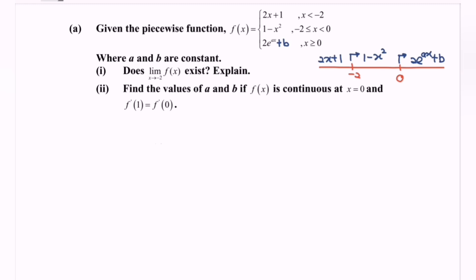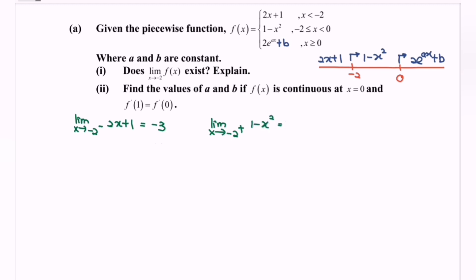Number 1: does the limit when X approaches negative 2 for the function f(X) exist? Explain the situation. The limit when X approaches negative 2 from the left for the function 2X plus 1 — if we substitute negative 2, we obtain negative 4 plus 1, and the value approaches negative 3. The limit when X approaches negative 2 from the right for the function 1 minus X squared — substituting gives 1 minus 4, which is negative 3.